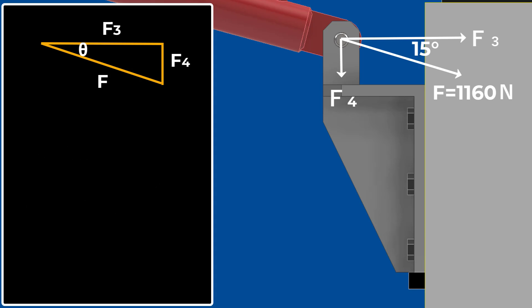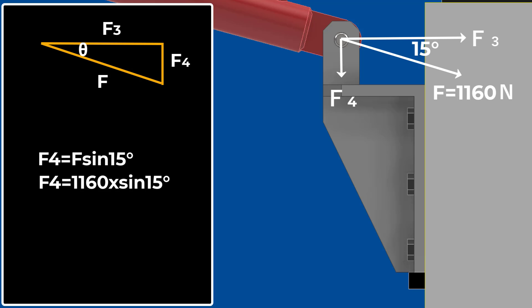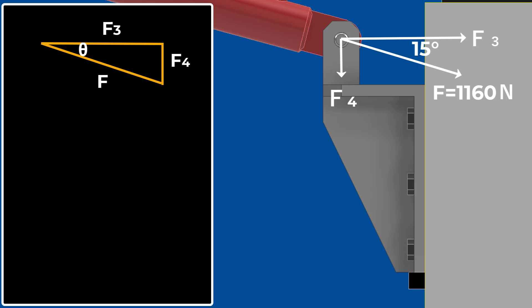続いて、垂直方向の力F4を出していきたいと思います。こちらは先ほどの三角関数と同じ考え方で算出していきますと、F4 = Fsin15° = 1160 × sin15° で、約300ニュートンということになります。この結果から、水平方向の分力は1,121ニュートン、垂直方向の分力は300ニュートンかかっているということが分かります。